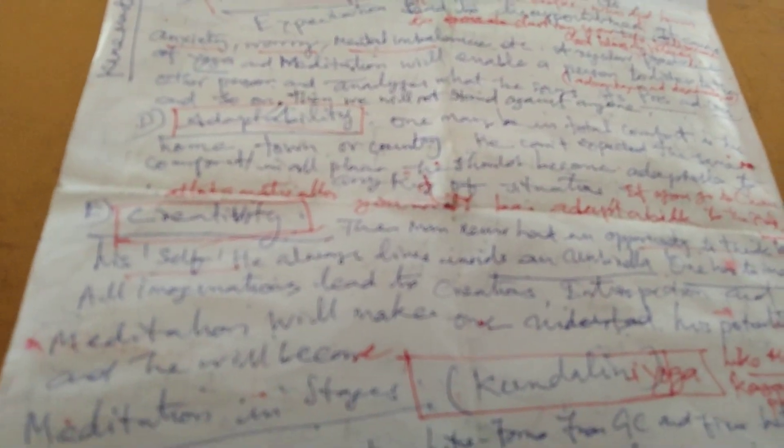Receptivity. Expectation leads to disappointment. It causes anxiety, worries, mental imbalances. Regular practice of yoga and meditation will enable persons to listen to others, analyze what he says, its pros and cons, merits and demerits. Then we will not stand against anyone. We will accept all their statements after studying pros and cons. If you regularly do yoga and meditations, we will become amiable person, good person, to all the people in this world.